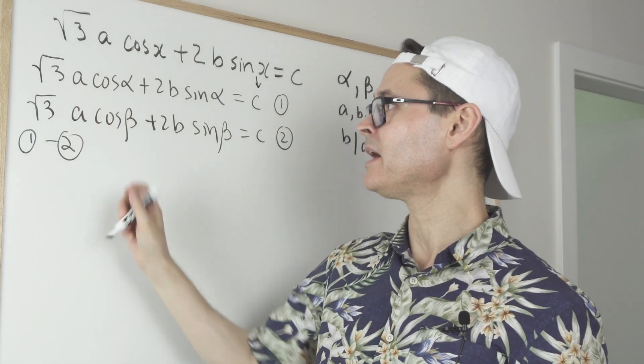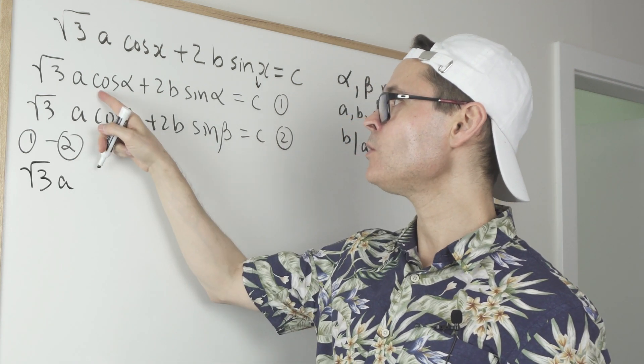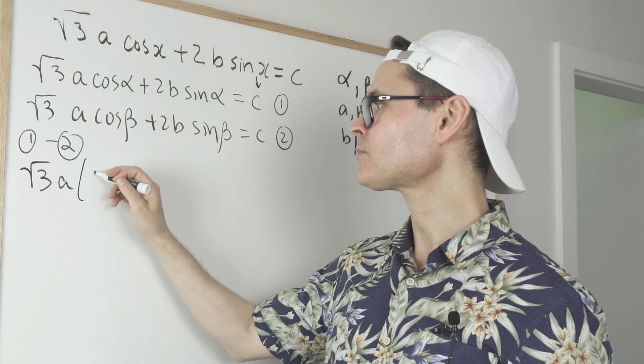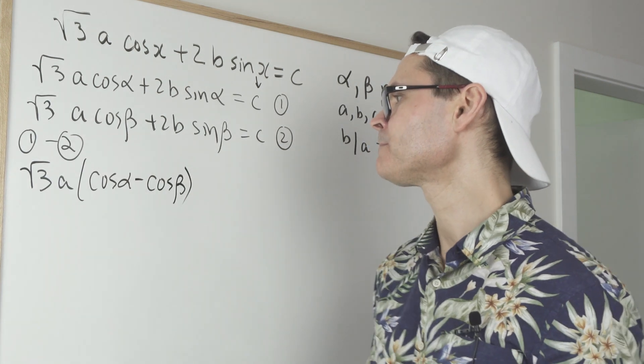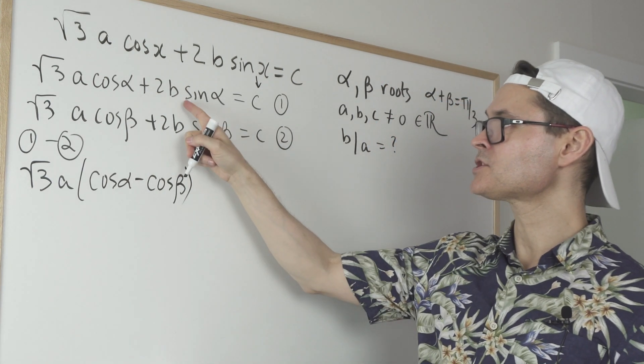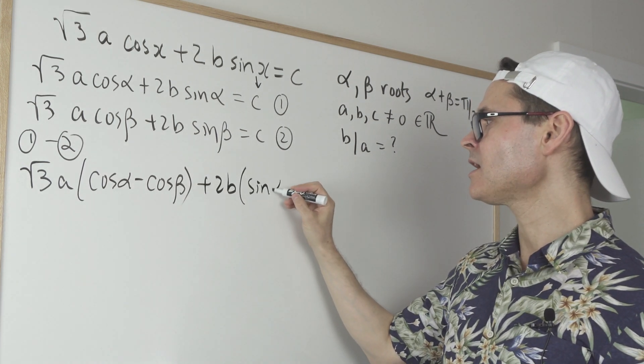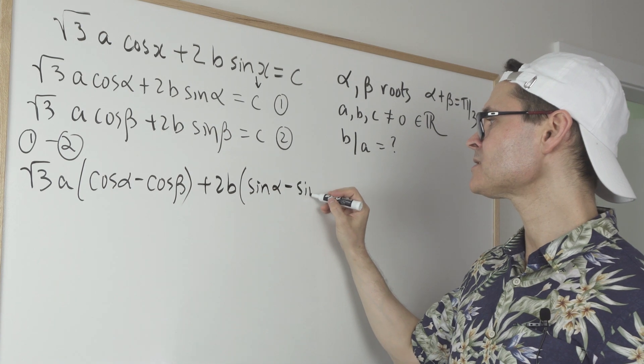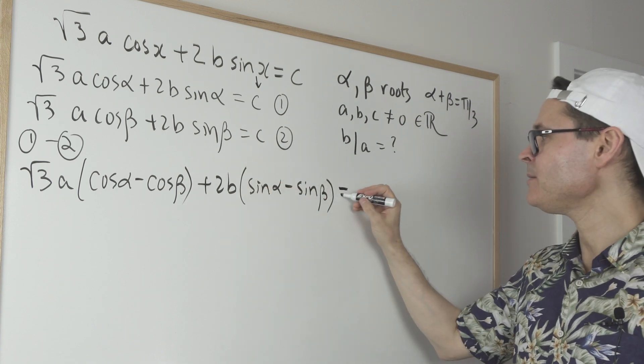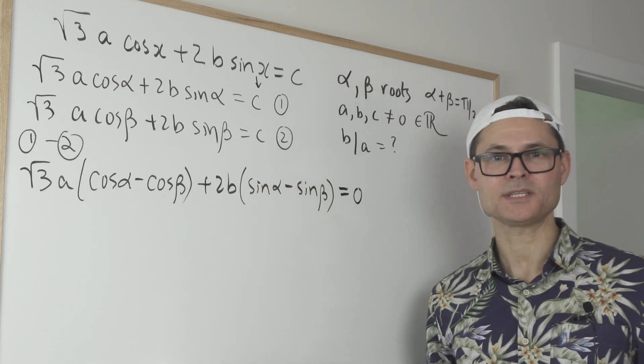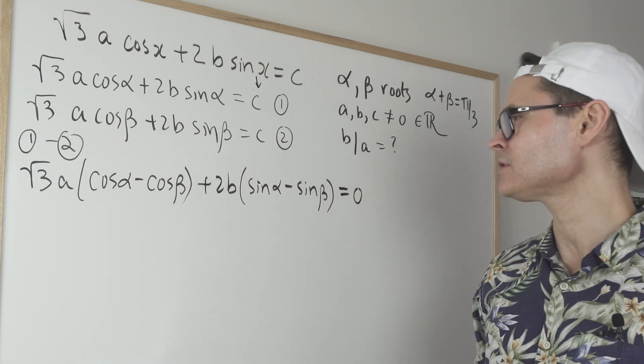These are like terms. So this minus this is going to be √3 times A times cosine α minus cosine β. Cosine α minus cosine β. And here as well, this minus this, well, that's +2B in brackets sine α minus sine β. And the brilliance here is it gets rid of the C. And that's okay because the question doesn't really care about C. It wants A and B. It wants B over A, it wants the ratio of the two.